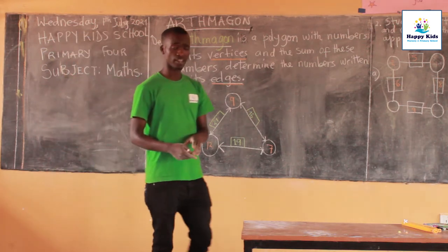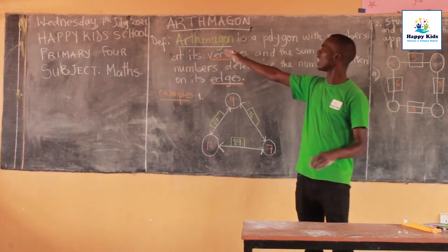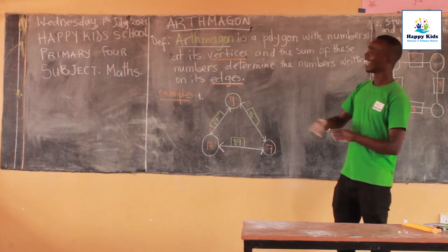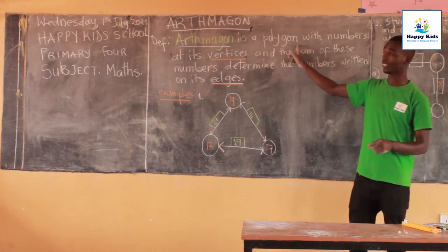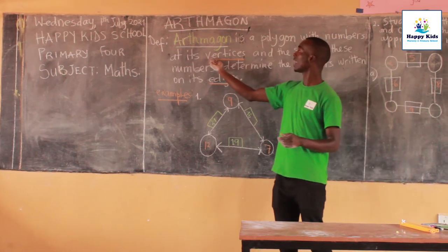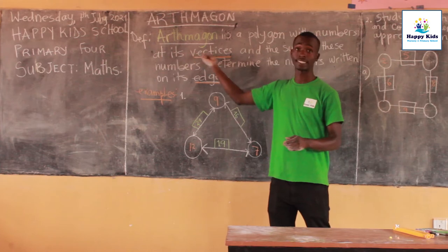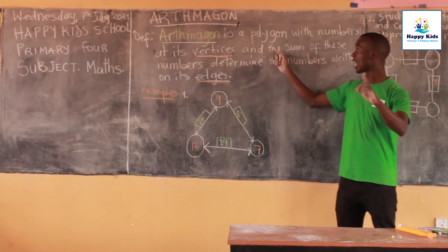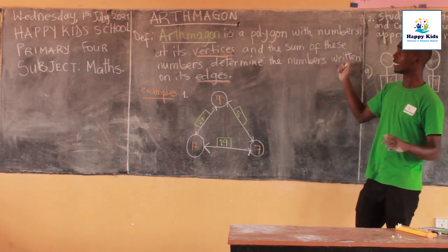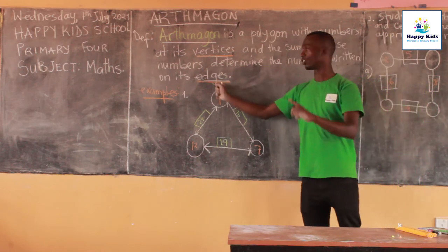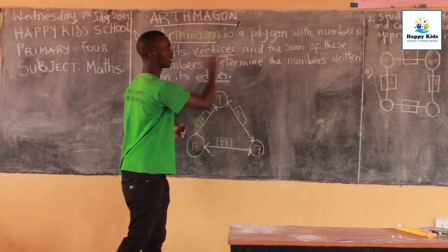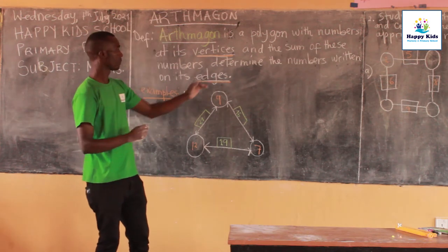Dear students, I want to remind you all about the Alphimagon. What is the Alphimagon? The Alphimagon is a polygon — it is a polygon with numbers at its vertices. And the sum of these numbers determines the numbers written at its edges. I want you to know what a vertex is, and what an edge is.